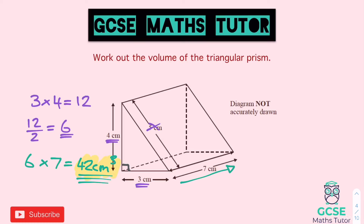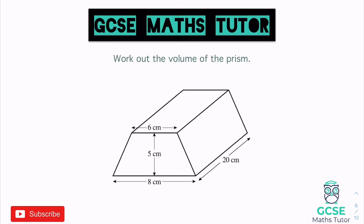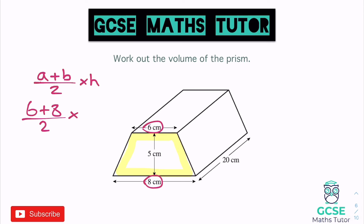Now we're going to look at something slightly different — a trapezium prism. The cross section here is a trapezium. You need to know the formula for the area of a trapezium: (a + b) ÷ 2 × h, where a and b are the two parallel sides and h is the perpendicular height between them. This can also be written as ½(a + b) × h. Looking at the shape, the two parallel sides are 6 and 8, and the perpendicular height is 5.